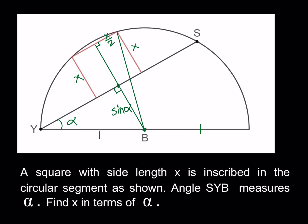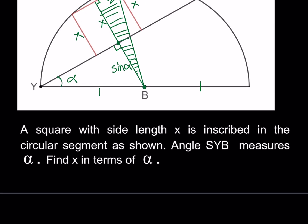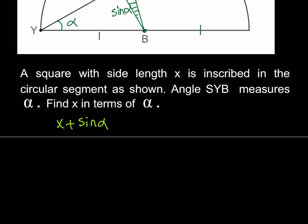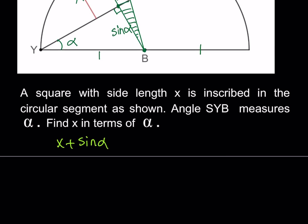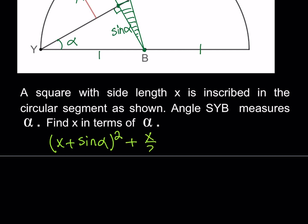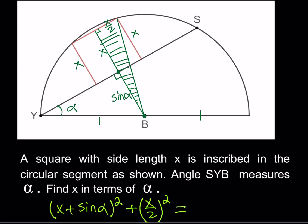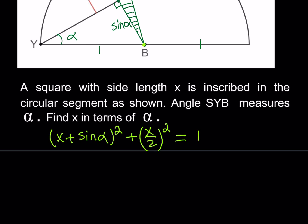I still need to associate alpha and x. This segment is also x because it's parallel to the sides of the square. So now we have a right triangle. We'll use the Pythagorean theorem. The height of the right triangle is x plus sine alpha, the base is x/2, and the hypotenuse is the radius, which equals one.